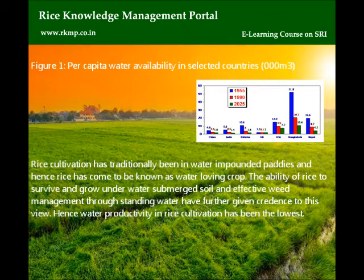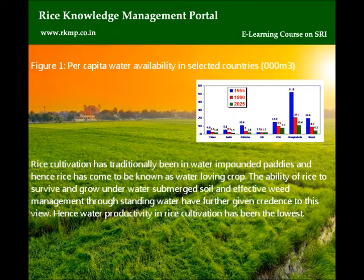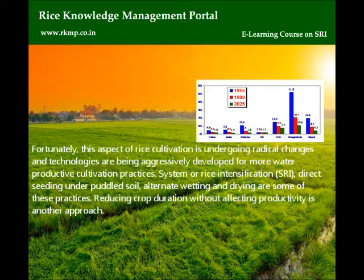Rice cultivation has traditionally been in water-impounded paddies, and hence rice has come to be known as a water-loving crop. The ability of rice to survive and grow under water-submerged soil and effective weed management through standing water have further given credence to this view. Hence, water productivity in rice cultivation has been the lowest. Fortunately, this aspect of rice cultivation is undergoing radical changes, and technologies are being aggressively developed for more water-productive cultivation practices. System of Rice Intensification (SRI), direct seeding under puddled soil, and alternate wetting and drying are some of these practices. Reducing crop duration without affecting productivity is another approach.